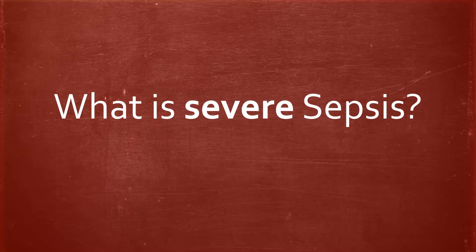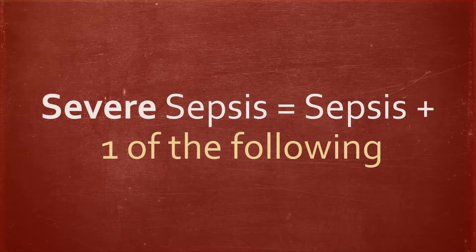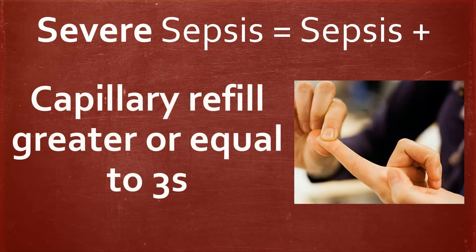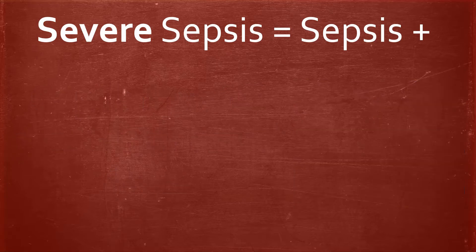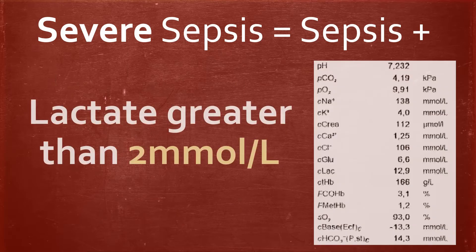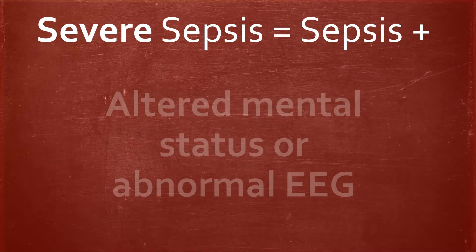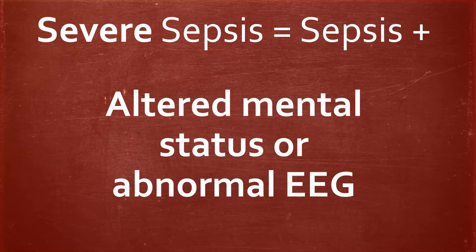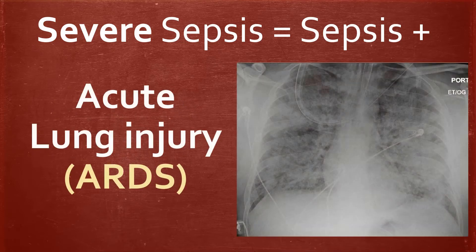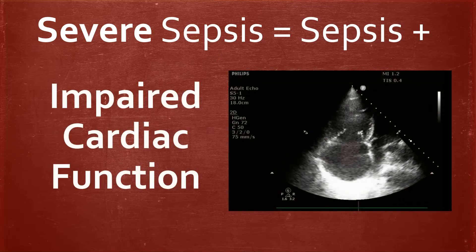Severe sepsis equals sepsis plus one of the following: skin mottling, capillary refill greater than or equal to 3 seconds, urinary output less than 0.5 ml per kg per hour or the need for dialysis, lactate greater than 2, altered mental status or abnormal EEG, platelets less than 100 or DIC, acute lung injury, or impaired cardiac function.